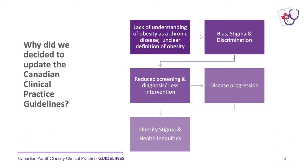Stigmatization of people living with obesity is causing reduced screening, reduced diagnosis, and fewer interventions for people living with obesity. This, in turn, according to epidemiological studies, has led to disease progression at the population level — including a 400% increase in the prevalence of severe obesity — and more health inequalities at the population level.